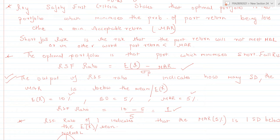The RSF criteria states that the optimal portfolio is that portfolio which minimizes the probability of the portfolio return being less than a minimum acceptable return. Shortfall risk is the risk that the portfolio return will not meet — or in other words, will be less than — the minimum acceptable return.